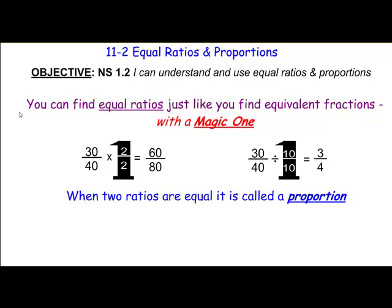So just to review: to find an equal ratio, you can multiply or divide with a magic one. If you multiply by a magic one, you will find an equal ratio — and that's going to be a key skill for the future work we're going to do with ratios and proportions.